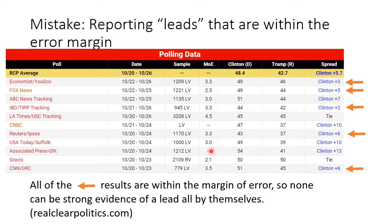I also really like when they publish the sample size — these samples are right around a thousand, with a couple of 2,000–3,000 person polls. There are also initials like LV or RV: RV is registered voter, LV is likely voter. That means the pollster has done something to filter the result to only include likely voters or registered voters in their sample, just to try and make the poll somewhat more accurate as a forecast of actual electoral performance.